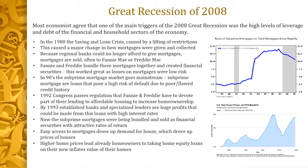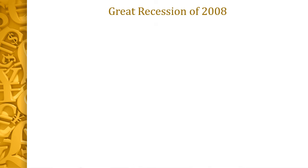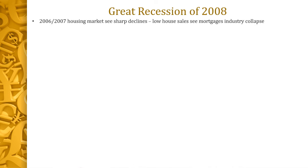When the bubble burst and house prices started coming down, people were underwater on their loans — they had a property that was not as valuable as the debt they had taken out. Individuals had become too leveraged. As these securities started having losses and people couldn't afford payments, they began to default on their mortgages and the securities started to become worthless. This brings us to 2006–2007, when we see home prices falling dramatically and the mortgage industry beginning to completely collapse.